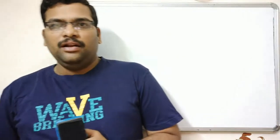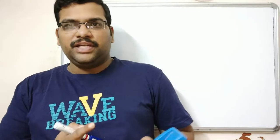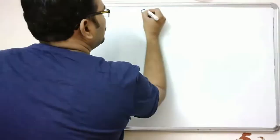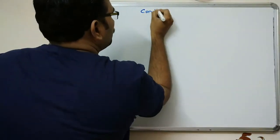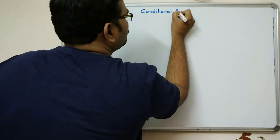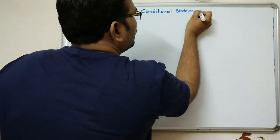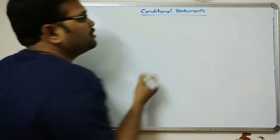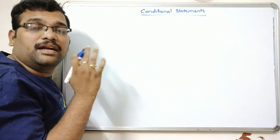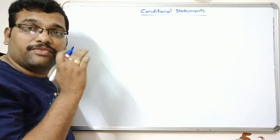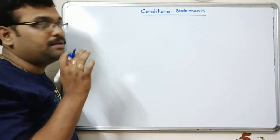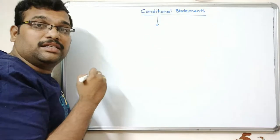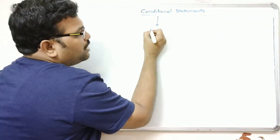Welcome back to our channel. In the previous session we covered iterative statements of C++. Today's session will go with another simple concept: conditional statements of C++. Conditional statements — the name itself indicates that we check a condition, and based upon the result of that condition we execute statements. A condition gives a boolean result.